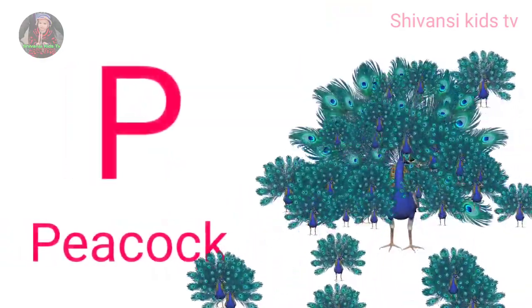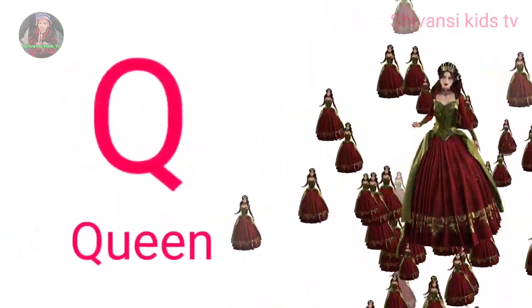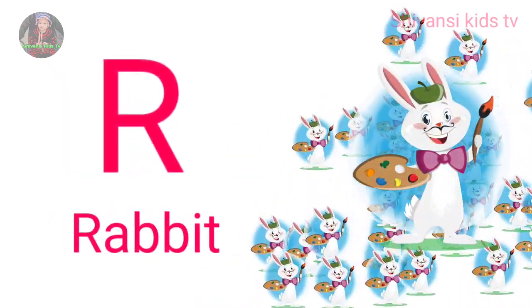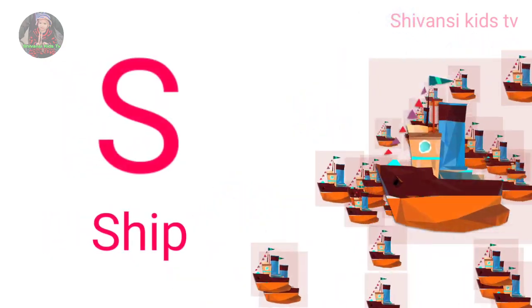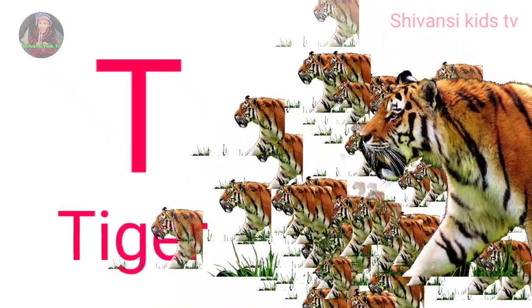P for peacock, Q for queen, R for rabbit, S for sheep, T for tiger.